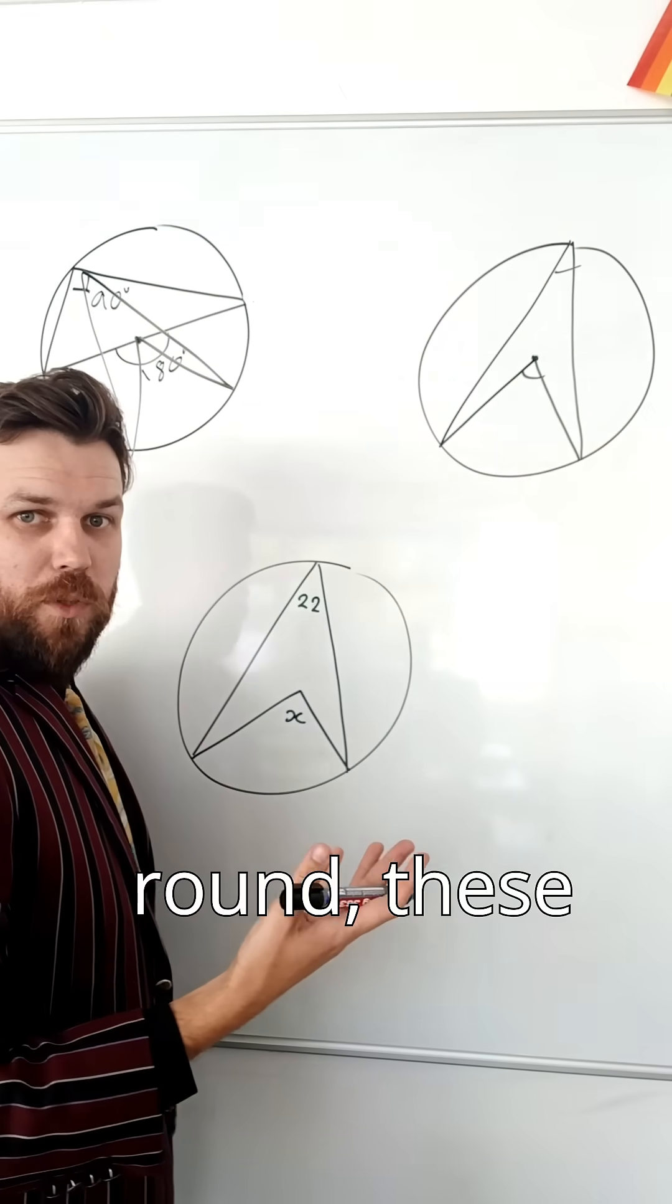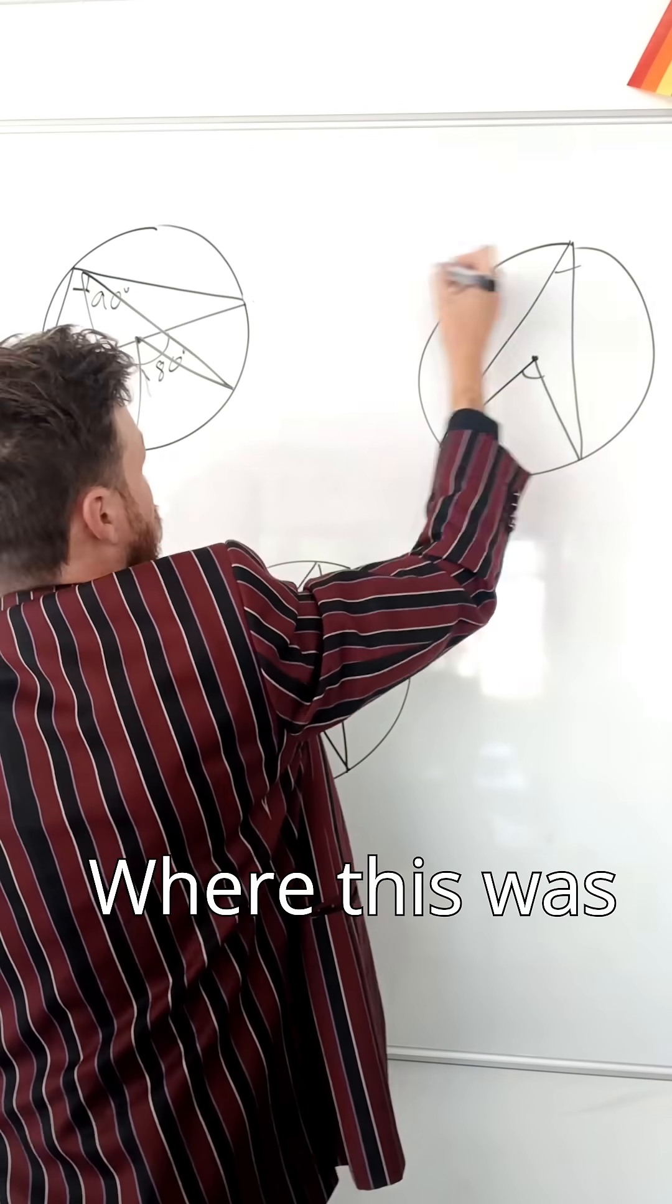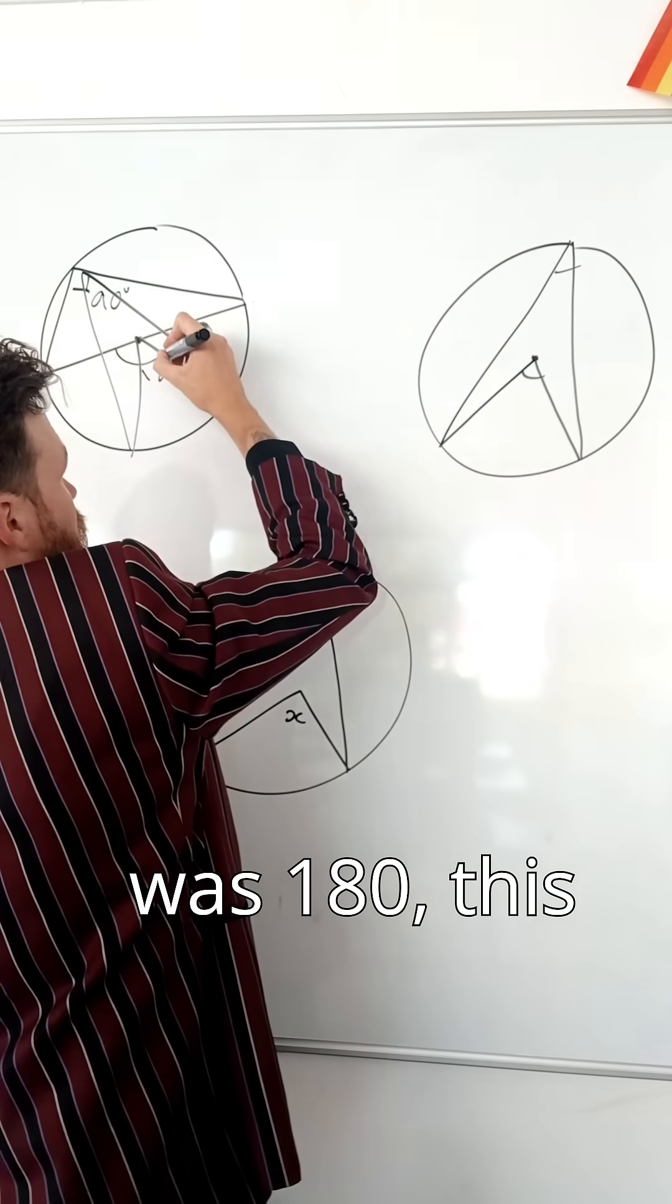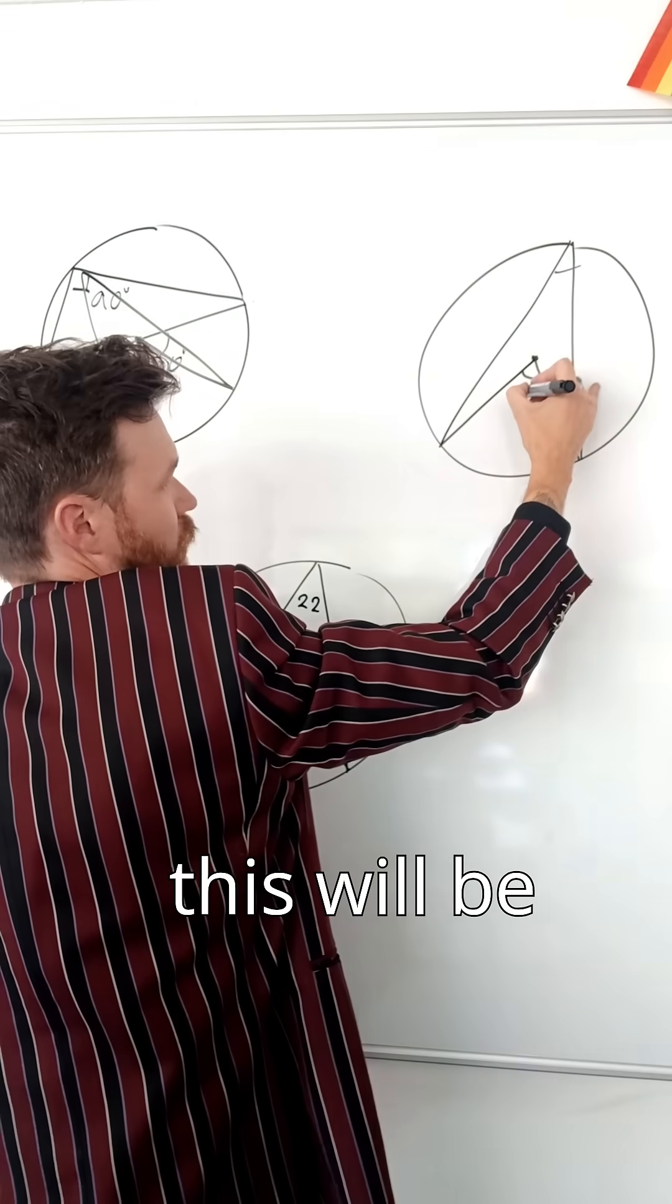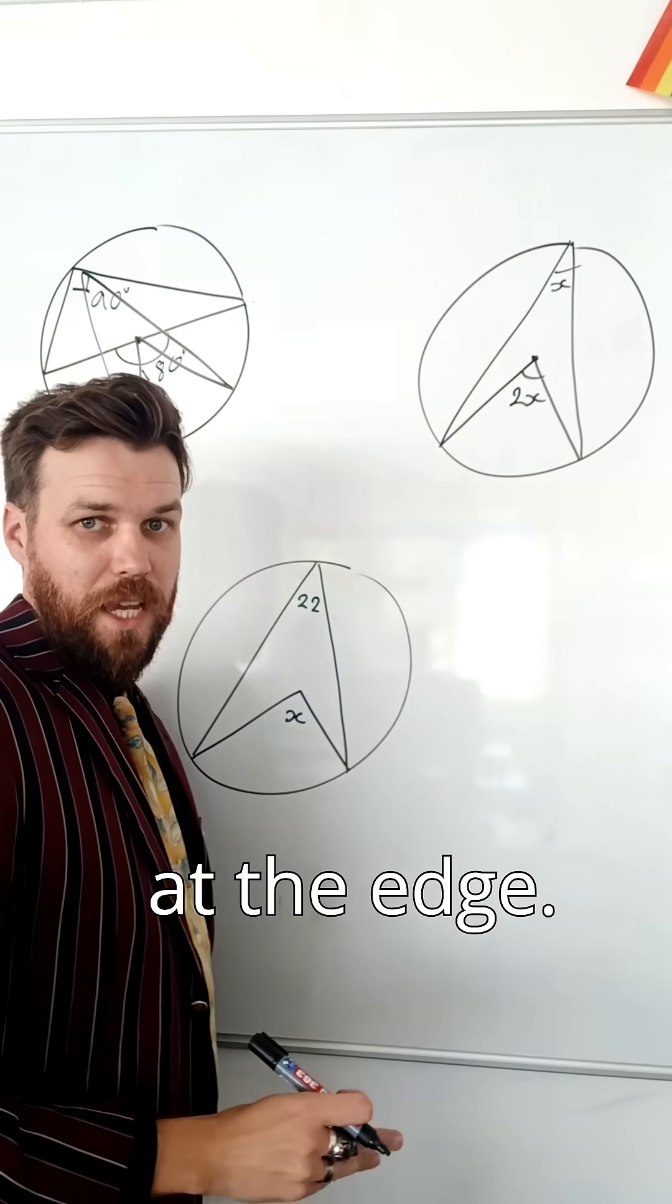Now, as these points move round, these retain the same relationship. Where this was 90, and this was 180, this was double that. Well, this will be double the one at the edge.